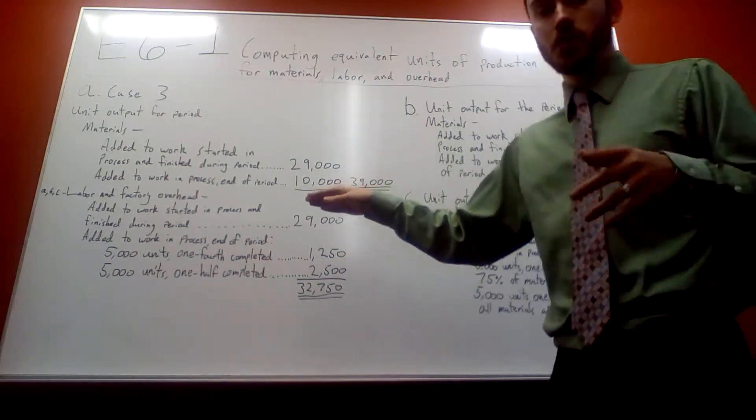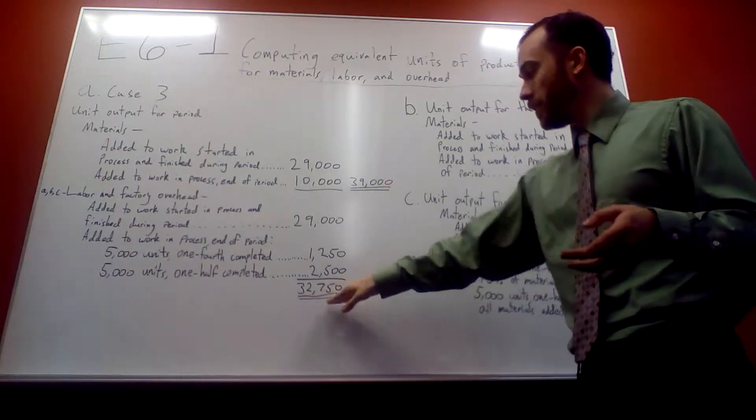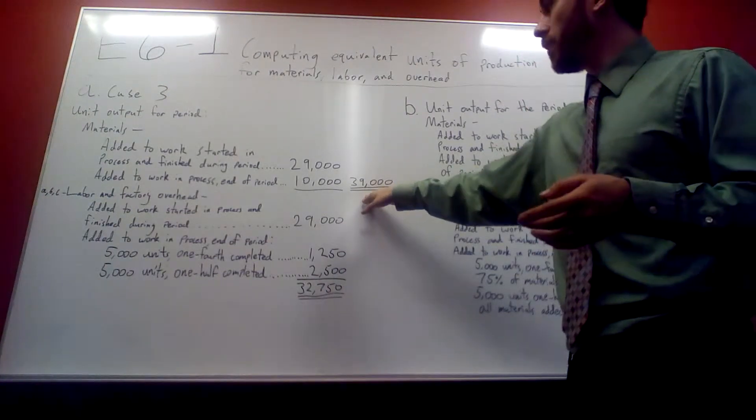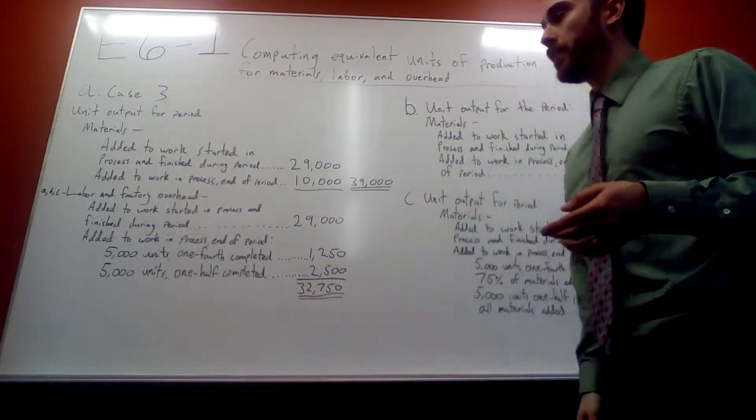Whereas materials, you're going to go by whatever it says. So you can see, when you're assigning cost, materials is going to have more equivalent units than factory and labor.